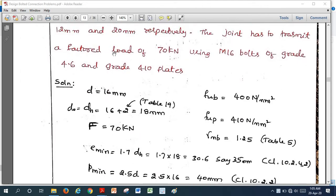Here they have directly given the factored load, that is 70 kN. If they are not given the factored load, if they mentioned a service or working load, we need to multiply the load factor, that is 1.5 according to the code.